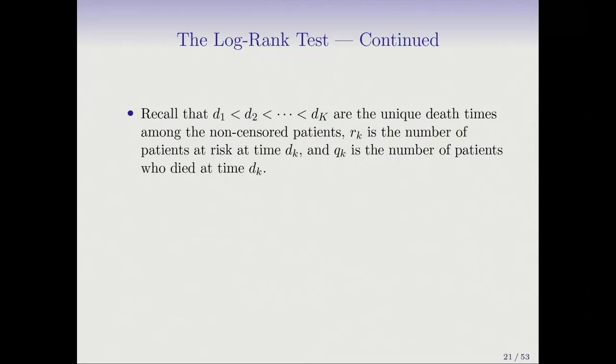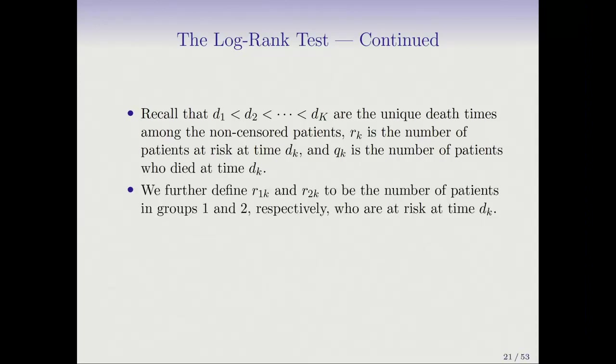And log rank test actually is very much, it has the same kind of structure as Kaplan-Meier. It's going to sum up things over the failure times. So let's call the unique failure times or death times D1 through DK. Let RK be the number of patients at risk at DK, and QK the number of patients who died at DK.